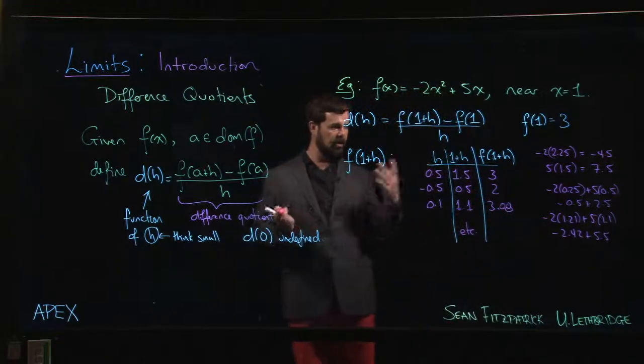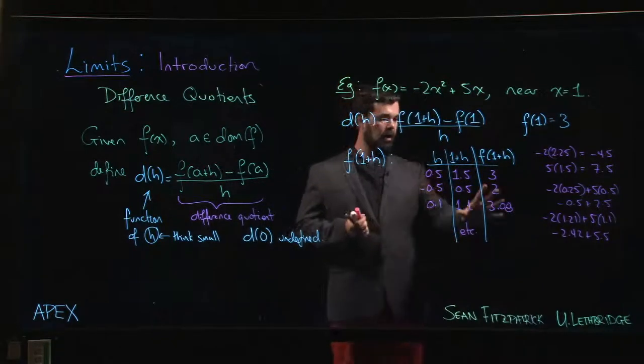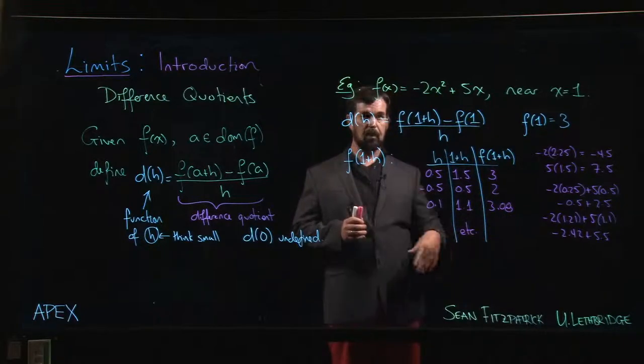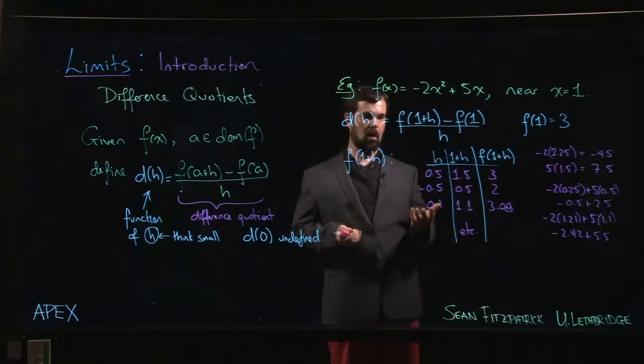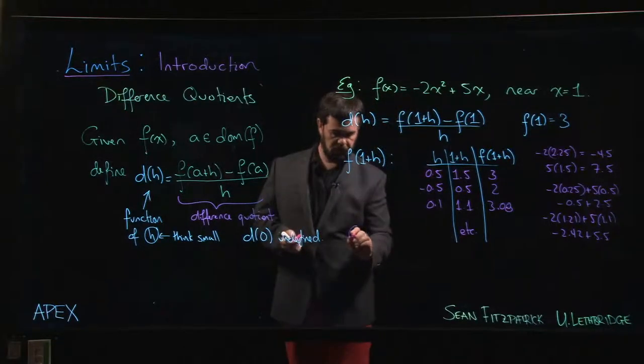And so on. I think you get the idea—you can plug in the different values, you can see what you get, and you can look to see whether or not these values are trending to some particular place. And then you could talk about what is—so the goal here is to figure out what is the limit as h goes to 0 of this difference quotient.